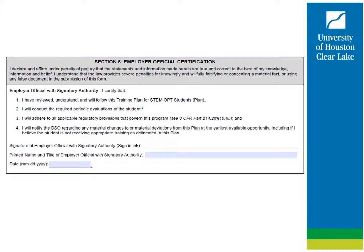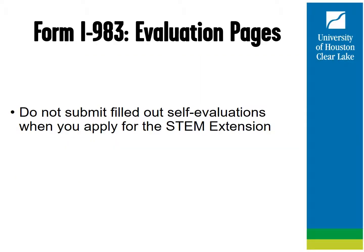Your employer will determine who can sign section 6 of the form. This may or may not be the same person as section 4. It should be someone who is familiar with your training plan and the person conducting your evaluations. Pen ink and DocuSign signatures are accepted; typed font signatures are not accepted by UHCL. Self-evaluations are due in one-year intervals and are not due at the time of application for STEM OPT. Please refer to the presentation on STEM OPT Extension reporting requirements for more information regarding the evaluations.